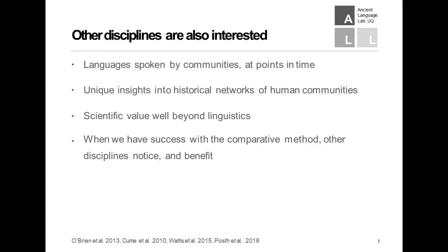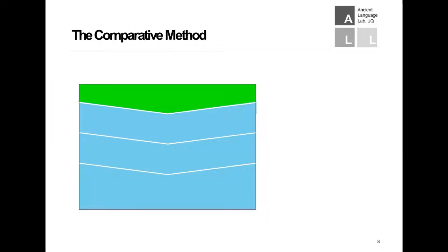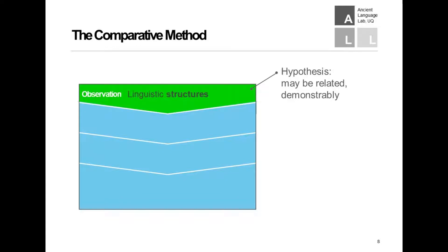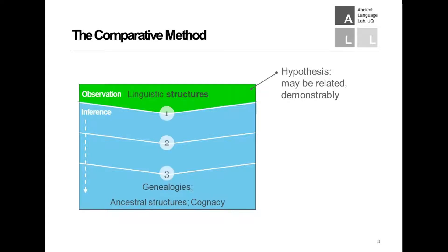The comparative method involves a number of processes. We start of course with observation — observations of linguistic structures across languages — and we start with a hypothesis that maybe these are historically related in a demonstrable way. We then engage in a very sophisticated process of inference which brings us eventually to genealogies, inferred ancestral structures or proto-forms, and inferences about the relationships among our original observed structures such as cognacy or borrowing.